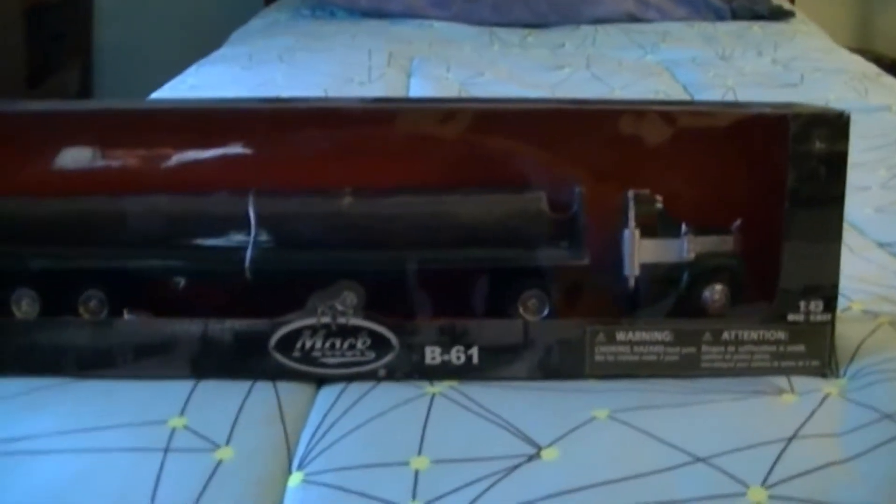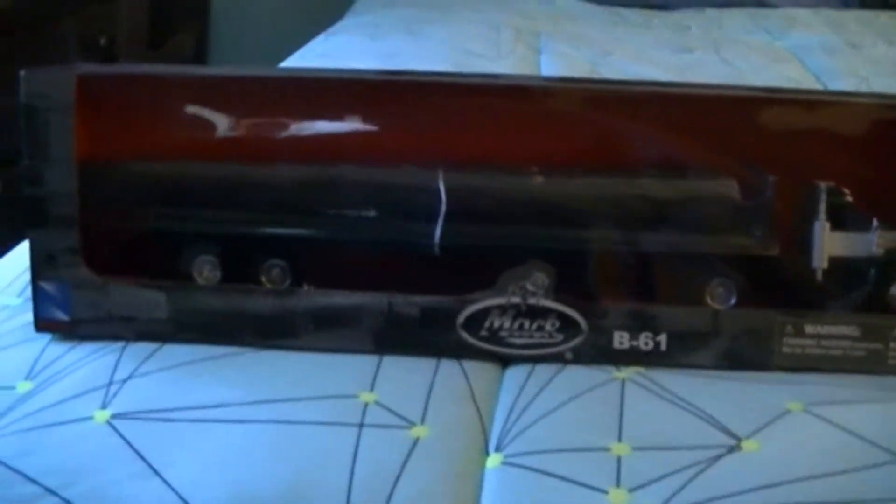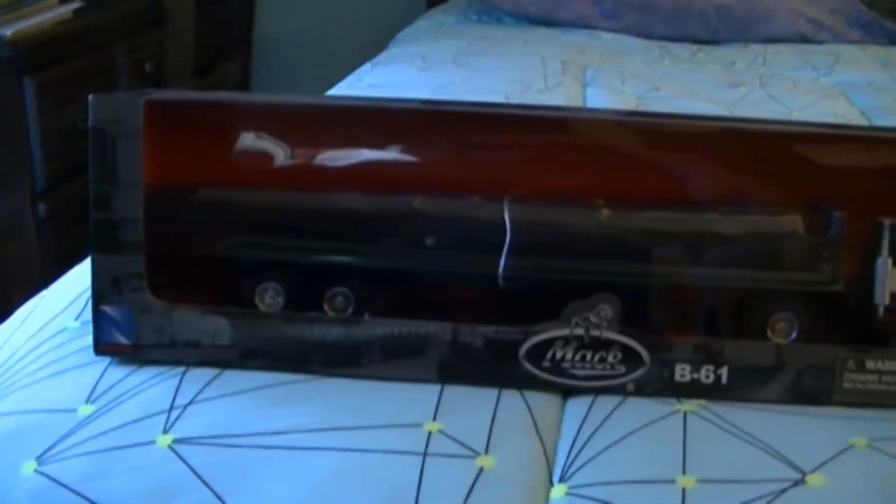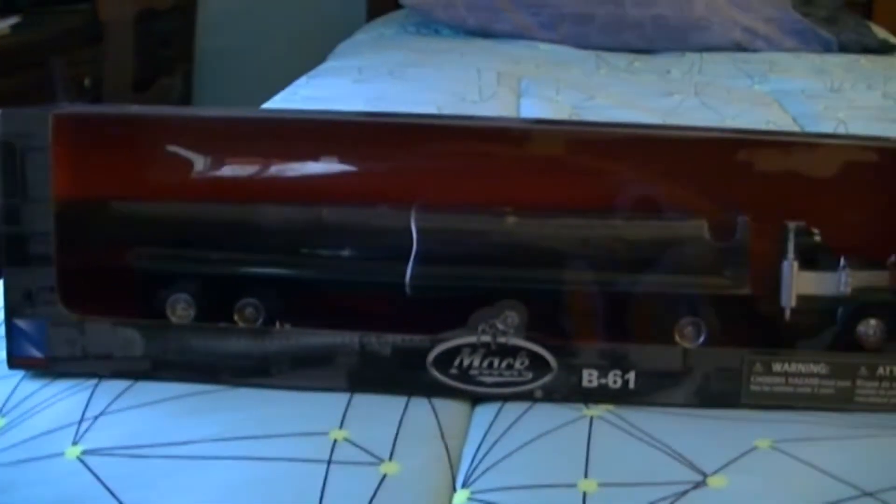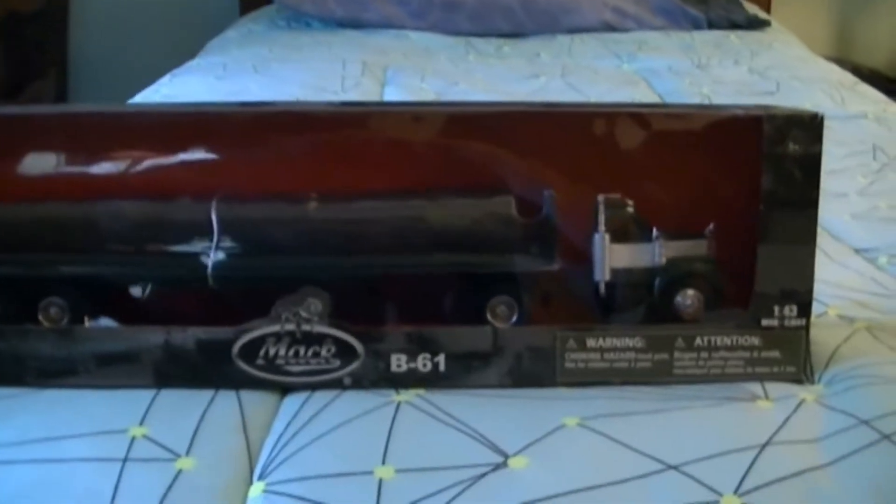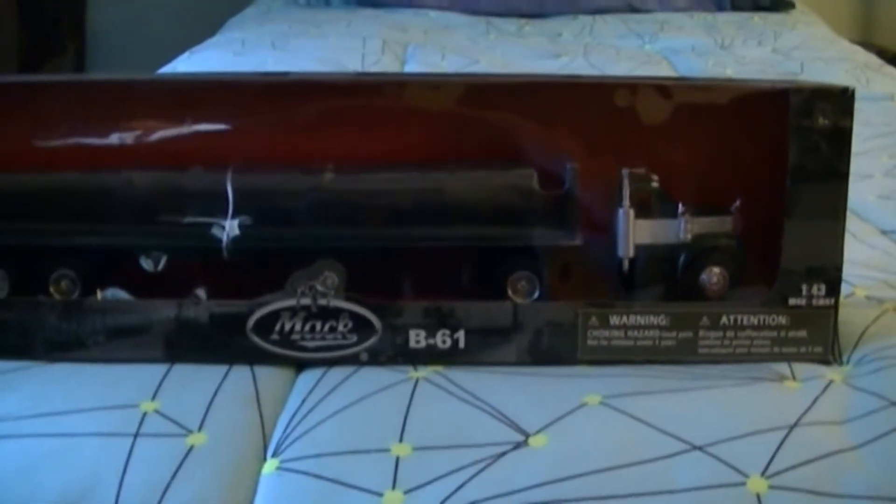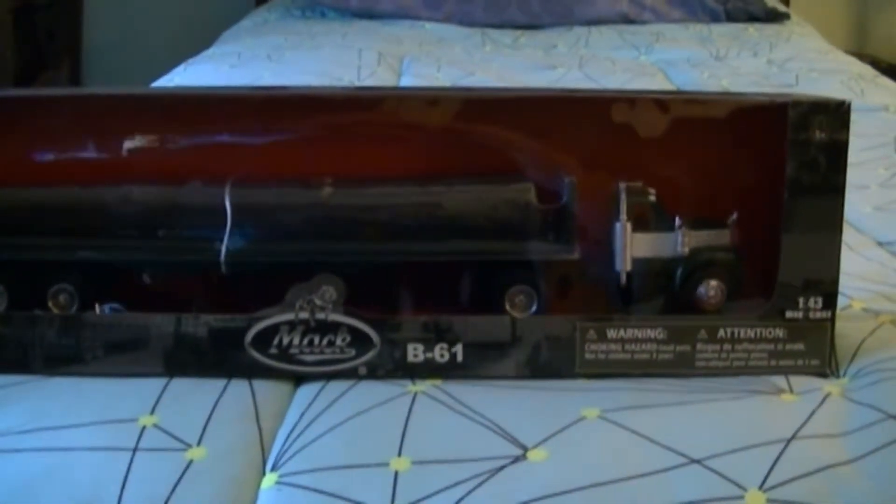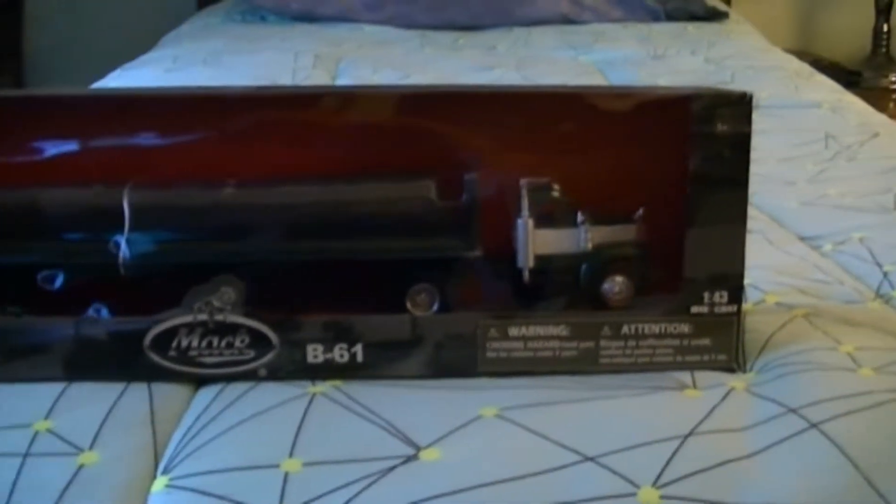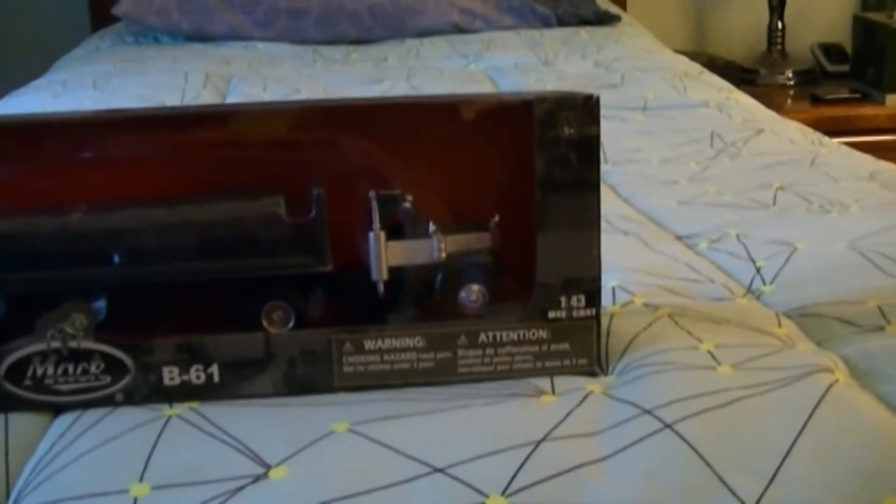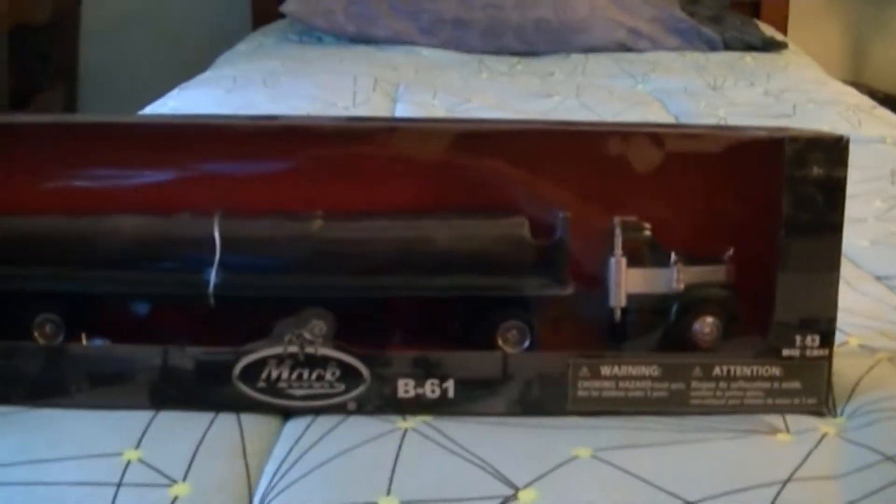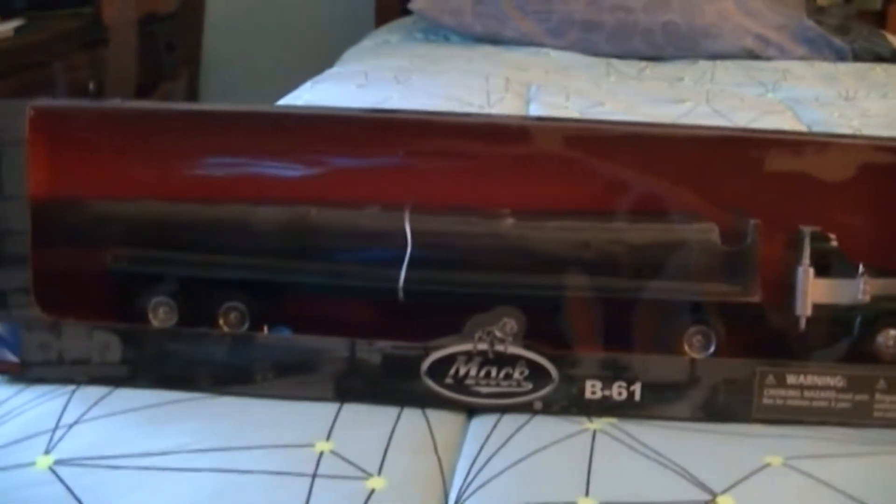Hello this is Jeff with J&A Junction. Here's another one of my Christmas items I got for Christmas. I got this from a friend of mine. This is a B61 Mac truck. It's green and white and it's got a flatbed trailer with a log load on it.